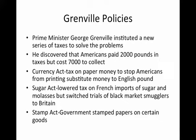The Sugar Act lowered the tax on French imports of sugar and molasses, but switched trials of black market smugglers to Britain. And the Stamp Act, in which the government stamped papers on certain goods.